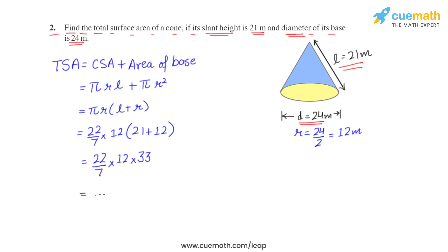So this gives us a decimal value. We can round it off to two decimal places, that is 1244.57 square meters.